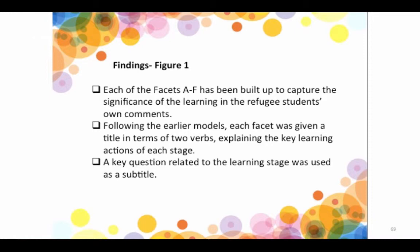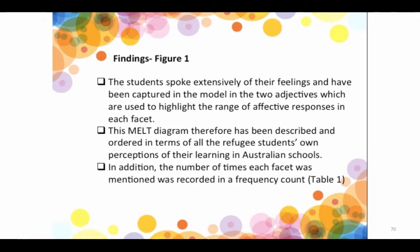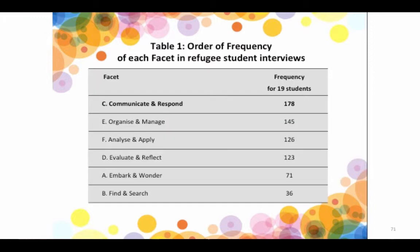This is a frequency count — a real insight into what the students told me. The reliance on the teacher was number one by far, and number two was accessing their own creative learning of the past, trying to analyse, apply, and reflect. But it was very difficult for these students.